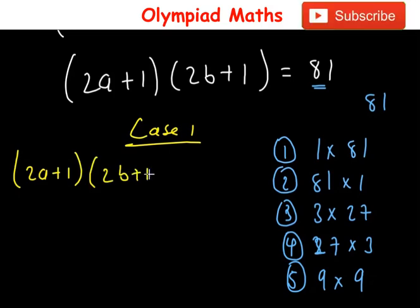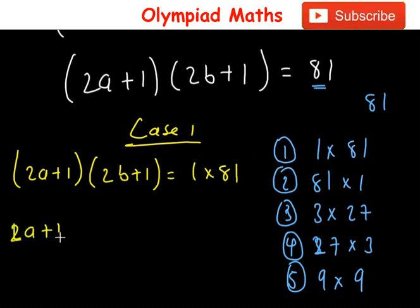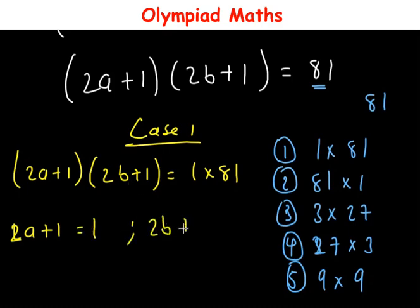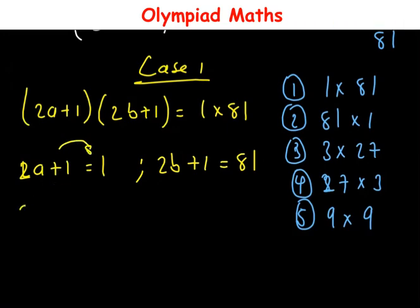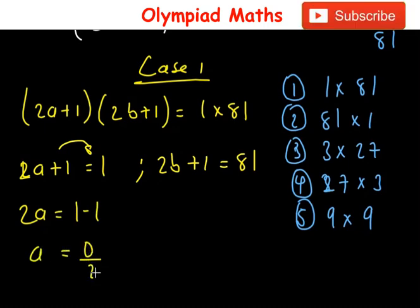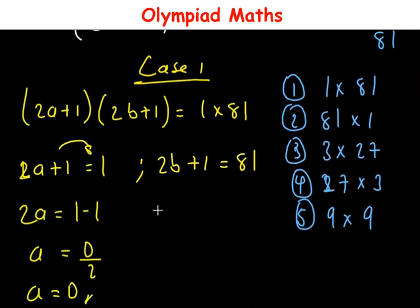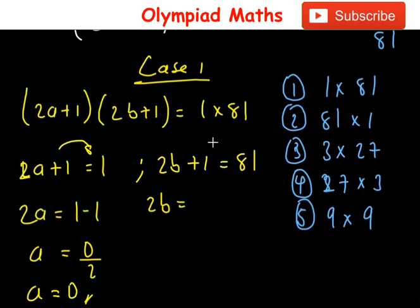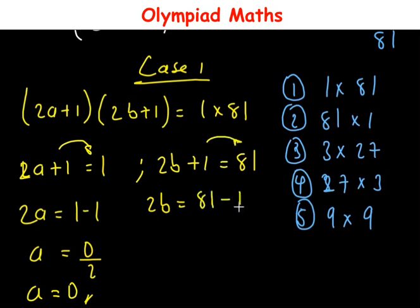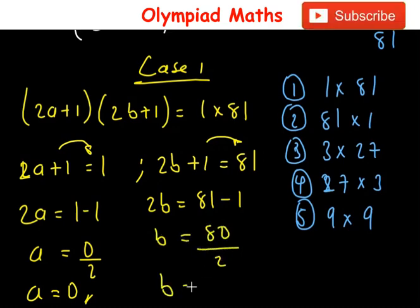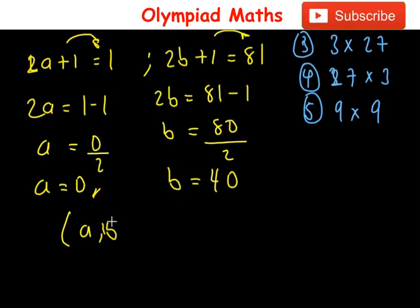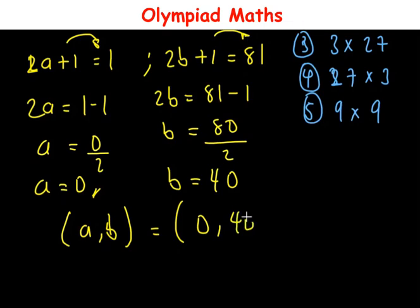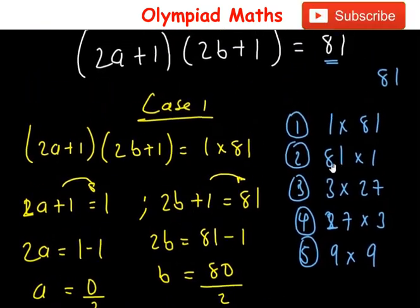For Case 1, we have (2a + 1)(2b + 1) = 1 × 81. So 2a + 1 = 1 and 2b + 1 = 81. From the first equation, 2a = 1 − 1 = 0, so a = 0. From the second, 2b = 81 − 1 = 80, so b = 40. In this case, the value of (a, b) is (0, 40).